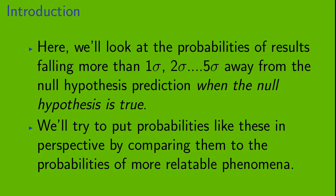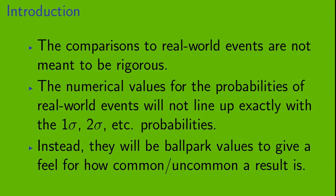Here, we're going to look at the probabilities of results falling more than 1 sigma, 2 sigma, etc., up to 5 sigma, away from the null hypothesis prediction, when the null hypothesis is in fact true. We'll try to put probabilities like these in perspective by comparing them to probabilities of more relatable phenomena. Now, the comparisons to real-world events are not meant to be rigorous. The numerical values for the probabilities of real-world events will not line up exactly with the 1 sigma, 2 sigma, etc. probabilities. Instead, they will be ballpark values to give a feel for how common or uncommon a result is.